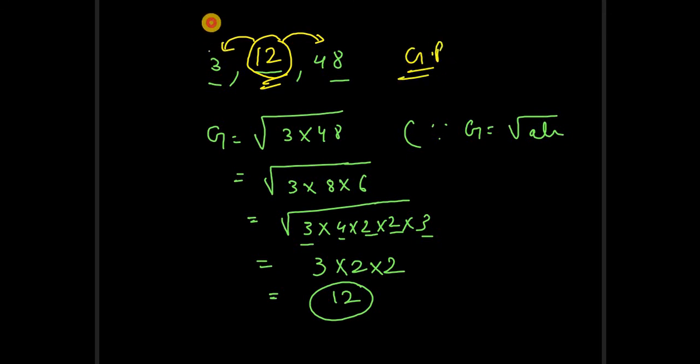If we multiply 4 with 3, we'll get 12, and again if we multiply 4 with 12, we'll get 48. So yes, it is a geometric progression.